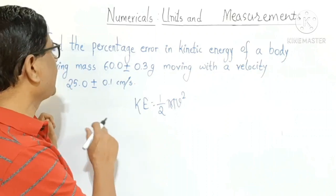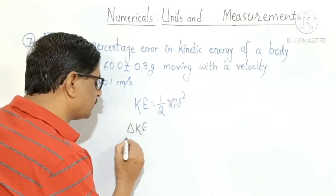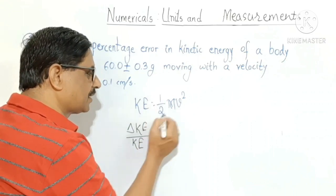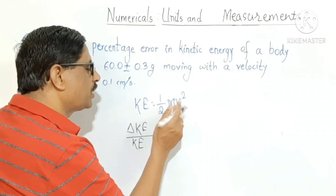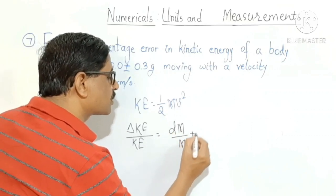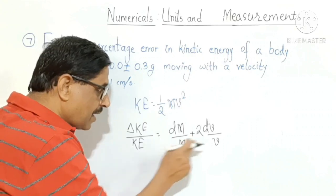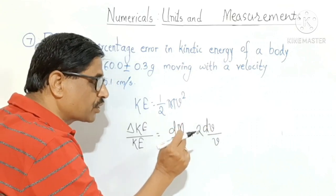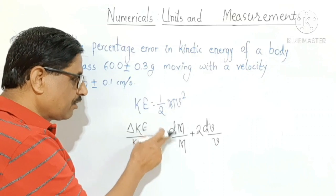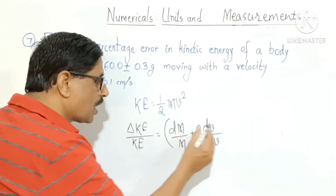To find the percentage error in kinetic energy, we write: delta KE divided by KE equals dm divided by m, plus 2 into dv divided by v. The factor 2 comes from the square on velocity. This gives the relative error in mass plus twice the relative error in velocity.